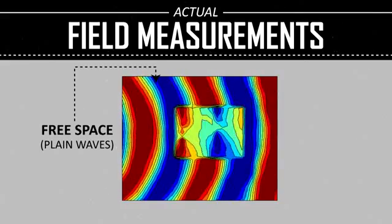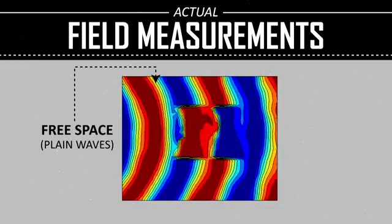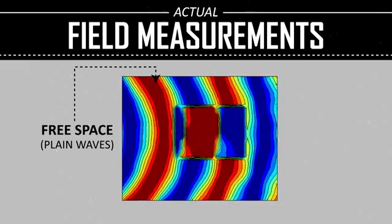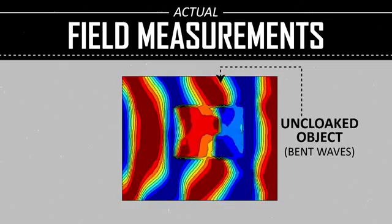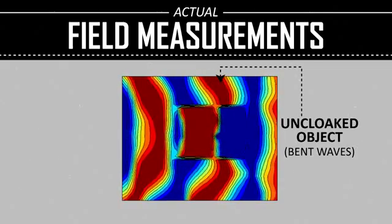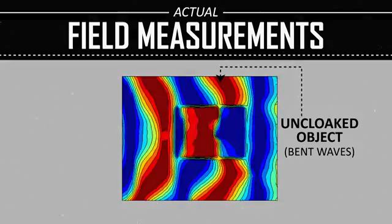When something scatters, what we look for is how the field is perturbed around the object. If nothing's there, we see kind of a plane wave going by in time. When you put the object there without a cloak, it bends the wave around it a little bit and it also scatters it in different places, creating shadows behind it.